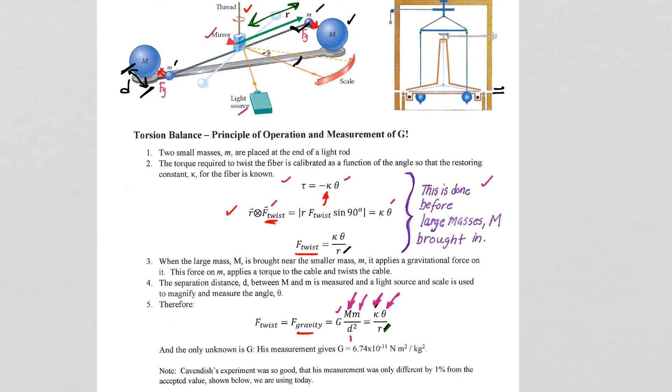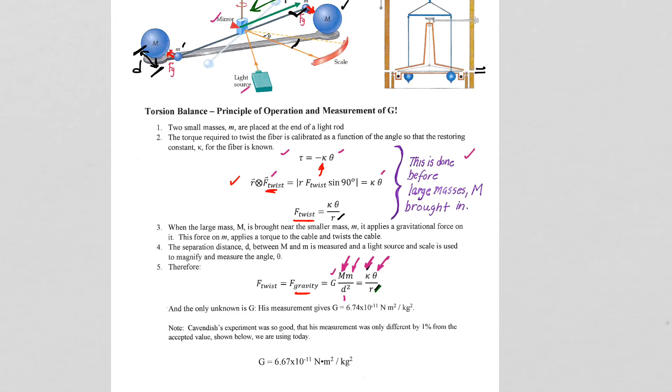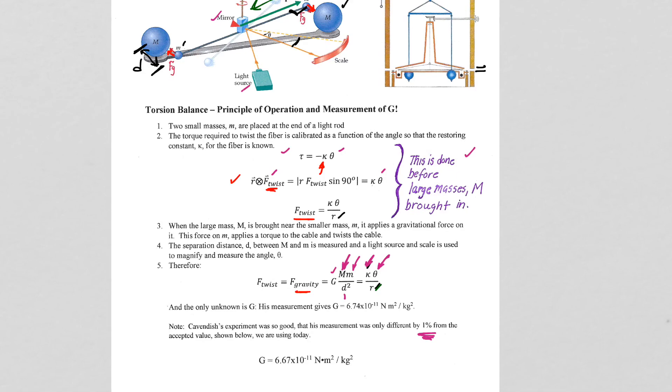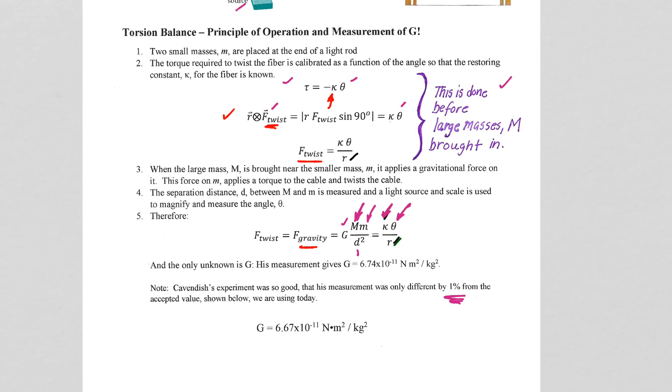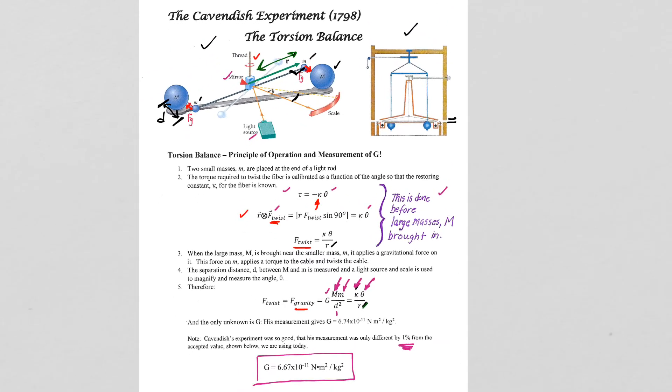And amazingly, that number is, to this day, within 1% different from our accepted value that we have been using in this chapter all along. So an absolutely amazing experiment, amazingly precise, and just of great historical significance.